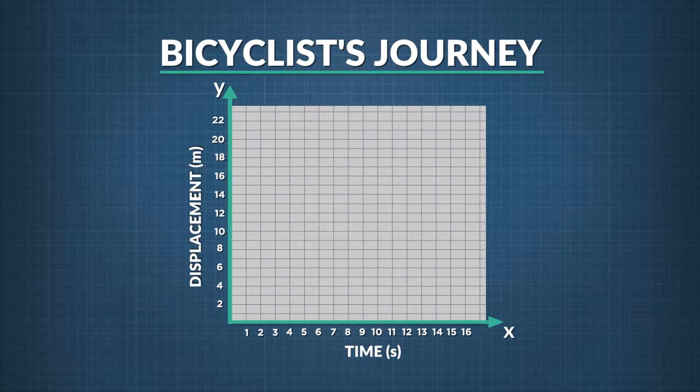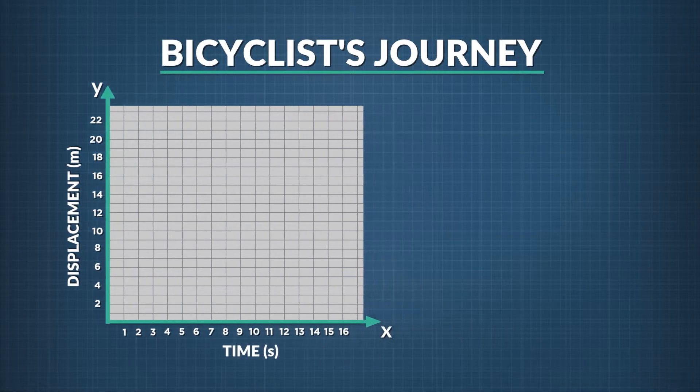Given the displacement versus time graph shown here, how would you represent the rider's journey on the graph? Using these axes, let's draw in each of the four stages of this journey on the graph.